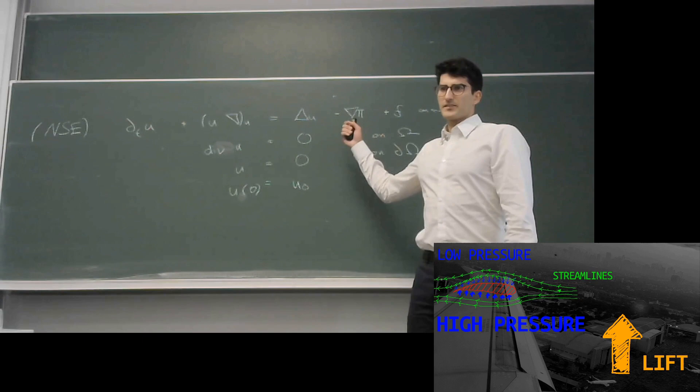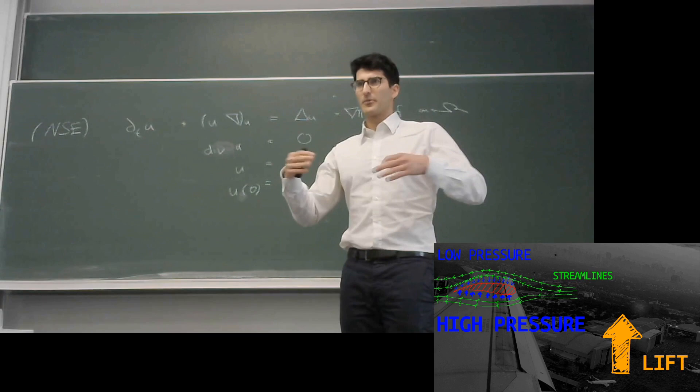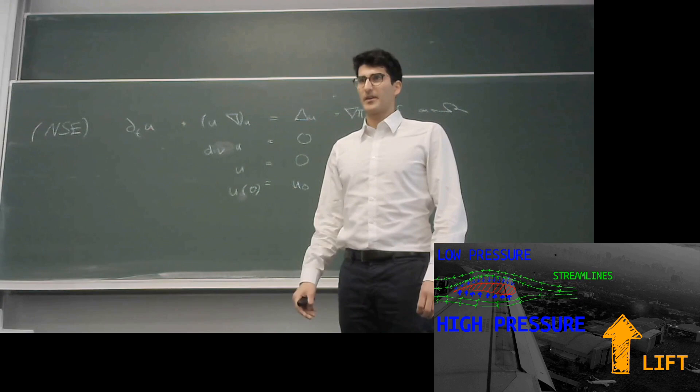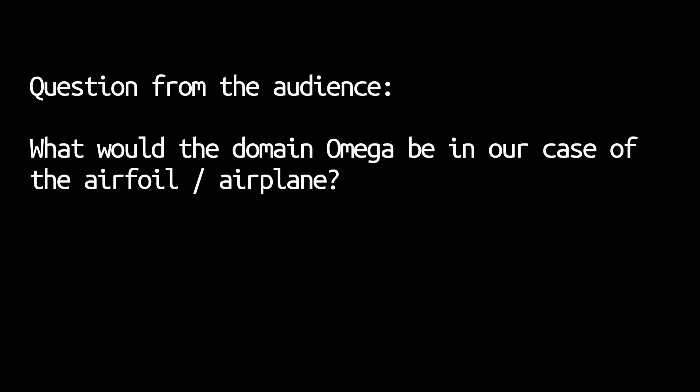The pressure here is a dynamical pressure — it comes from the speed that the velocity has. It's not the pressure we experience here or the pressure that gets lower when you climb on Mount Everest; that is the hydrostatic pressure, which normally is found in the additional force term.